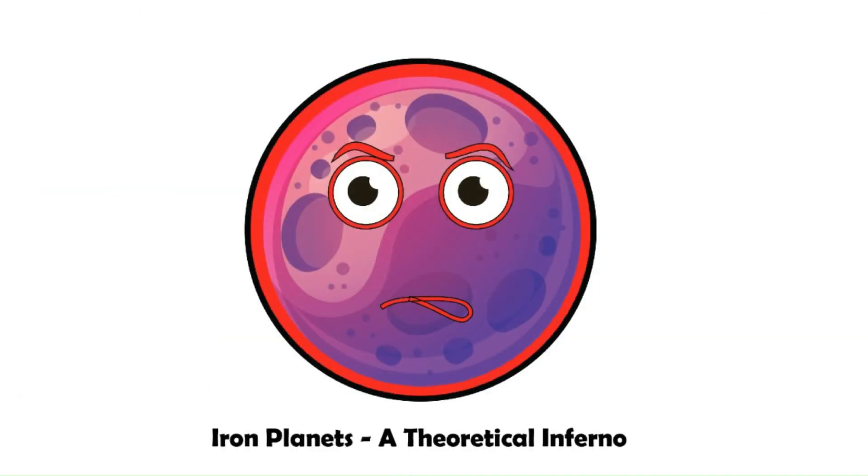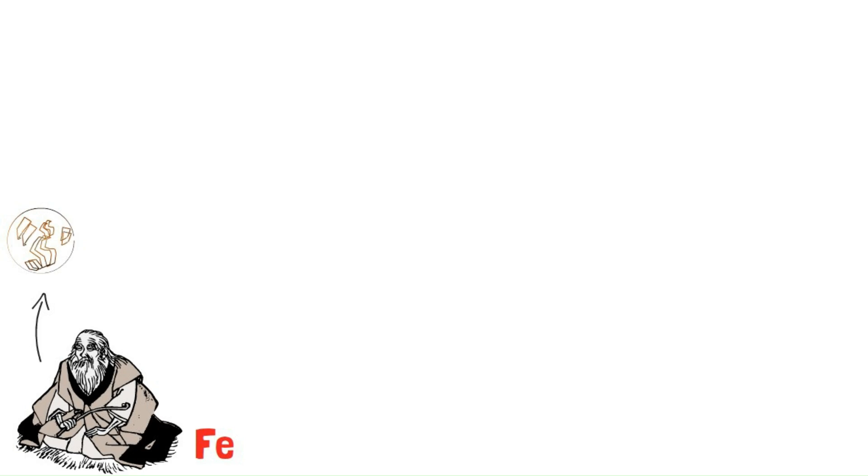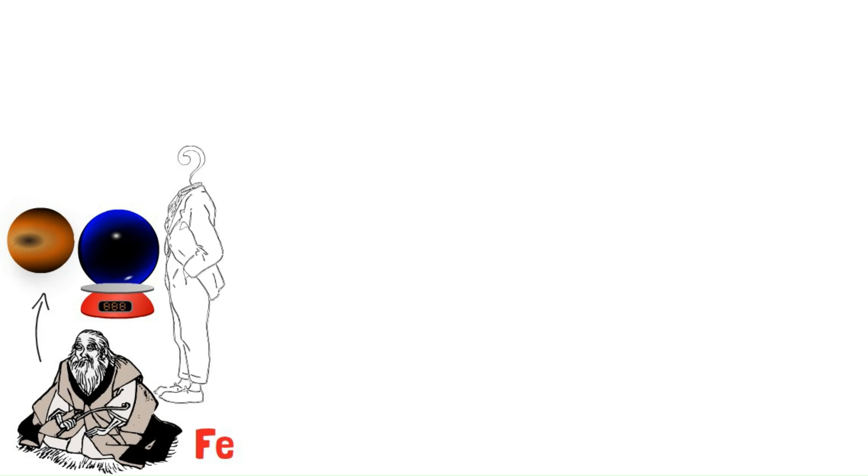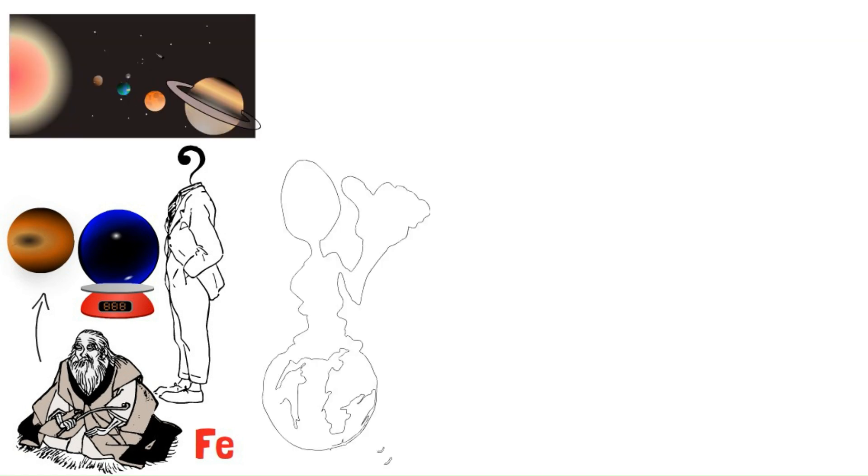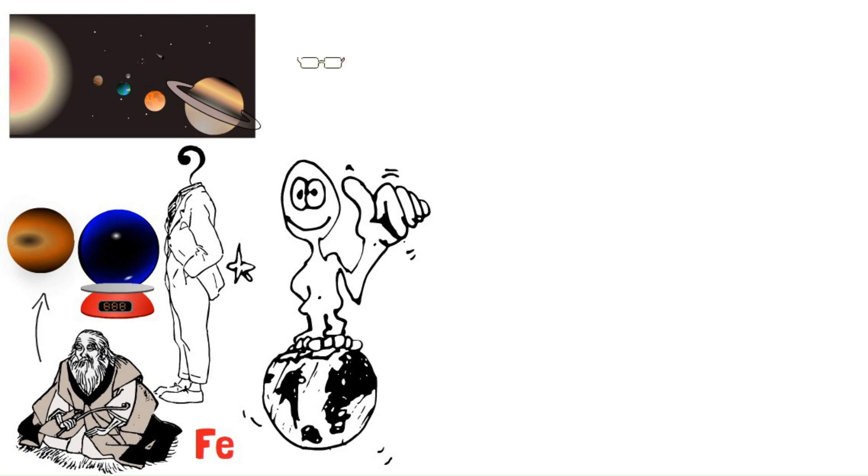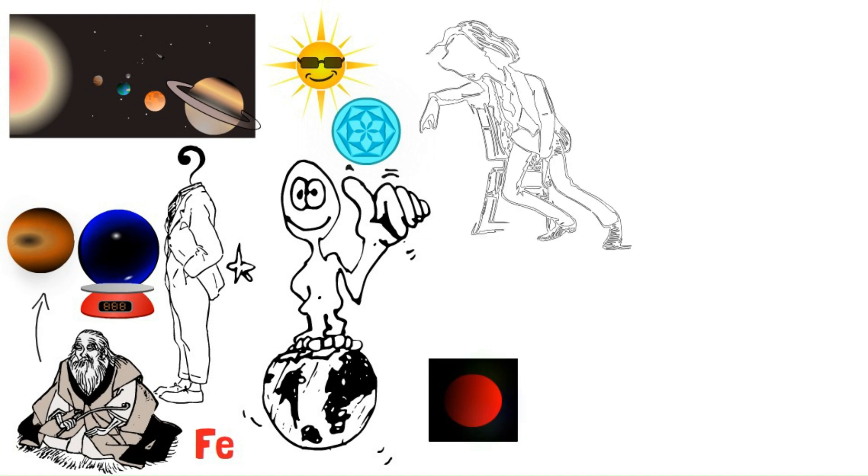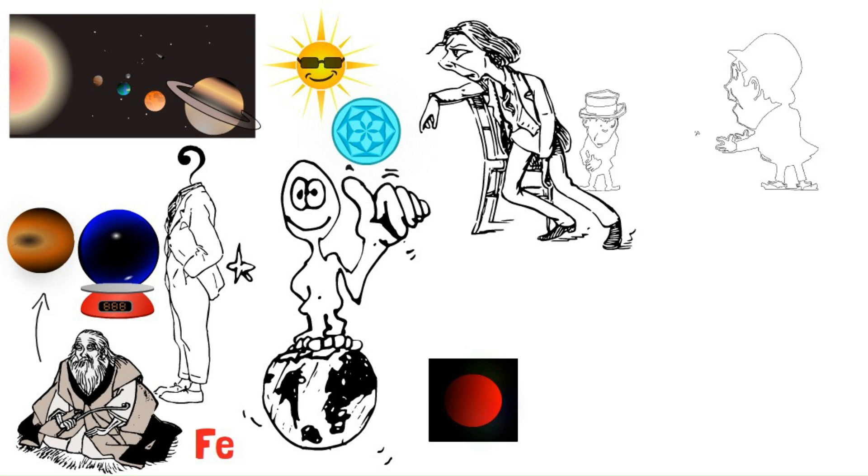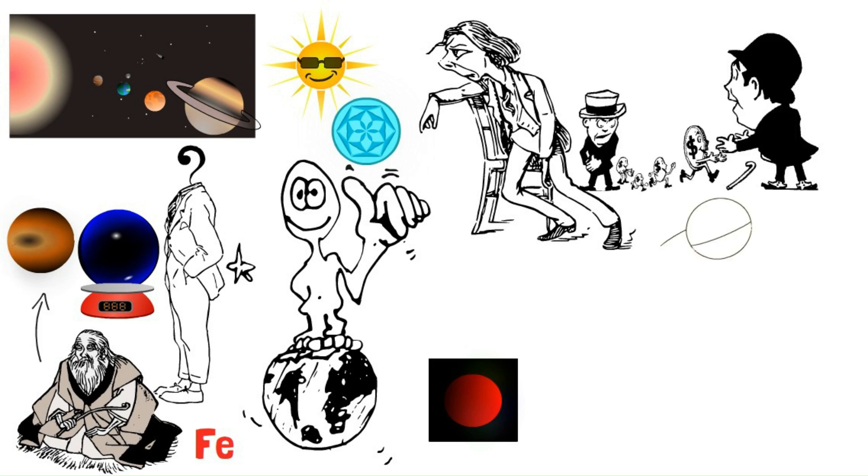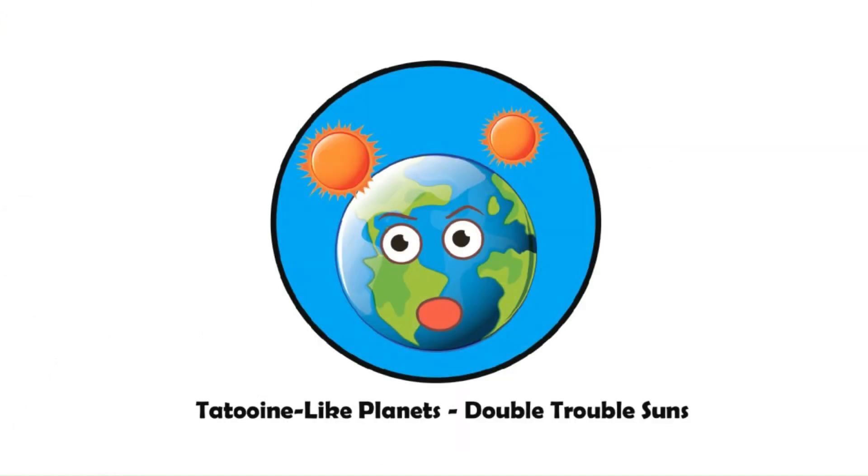Iron planets. A theoretical inferno. Speaking of iron, some theorists propose the existence of iron planets. These would be balls of solid iron, much denser than even Earth. While their existence remains unconfirmed, they paint a fascinating picture of planetary diversity. Imagine a planet where the ground beneath your feet is literally iron. Iron planets could form in extreme environments, perhaps from the remnants of exploded stars, or the cores of giant planets ripped apart by powerful gravitational forces. While they might not be hospitable to life as we know it, iron planets could offer valuable insights into the exotic possibilities of planetary formation under extreme conditions.